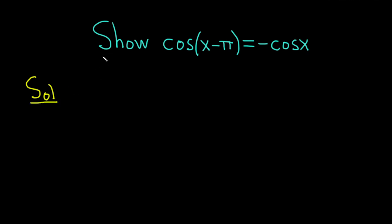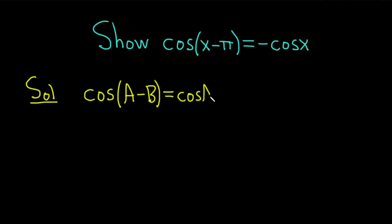Let's start by writing down the formula we're going to use. It's the cosine of a minus b — we're using this one because we have a minus — and this is equal to cosine of a times cosine of b. Because we have a minus, we can switch the sign, so we put a plus here: plus sine of a times sine of b.